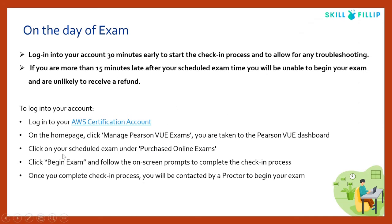You need to follow certain steps to begin your AWS certification exam from home. You need to login into your AWS certification account 30 minutes early to start the check-in process and allow for any troubleshooting. If you are late to join, you will be unable to start your exam and you won't receive a refund. The steps are: login to your AWS certification account, select 'Manage Pearson VUE Exams,' schedule your exam under 'Purchased Online Exams,' click 'Begin Exam,' and then start your check-in process.